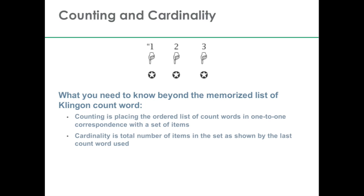There's one more step in this that young children have to acquire — the recognition that there's something special about the last count word that's used. When you're counting one, two, three objects, that 'three' is not only a count word, but it's also a cardinality word. It's telling you, as you're counting, how many objects there are in the set — what's the total number of things in the set. So the 'three' is serving two purposes: both as counting and also as cardinality for saying how many things are in the set.